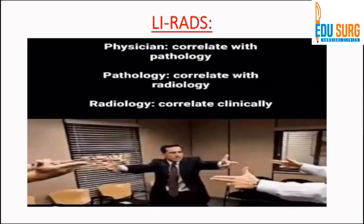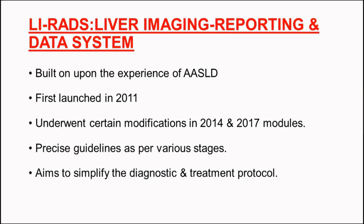Additionally, T2 weighted images, T2 fat-saturated images, and diffusion weighted images are obtained. After acquiring the images, we follow LI-RADS — the Liver Imaging Reporting and Data System. LI-RADS has replaced the conventional reporting system. It describes lesions in cirrhotic parenchyma into particular categories, and according to that category the patient can be followed up or managed. It is built upon the experience of the American Association for the Study of Liver Diseases, was launched in 2011, and underwent modifications in 2014 and 2017.